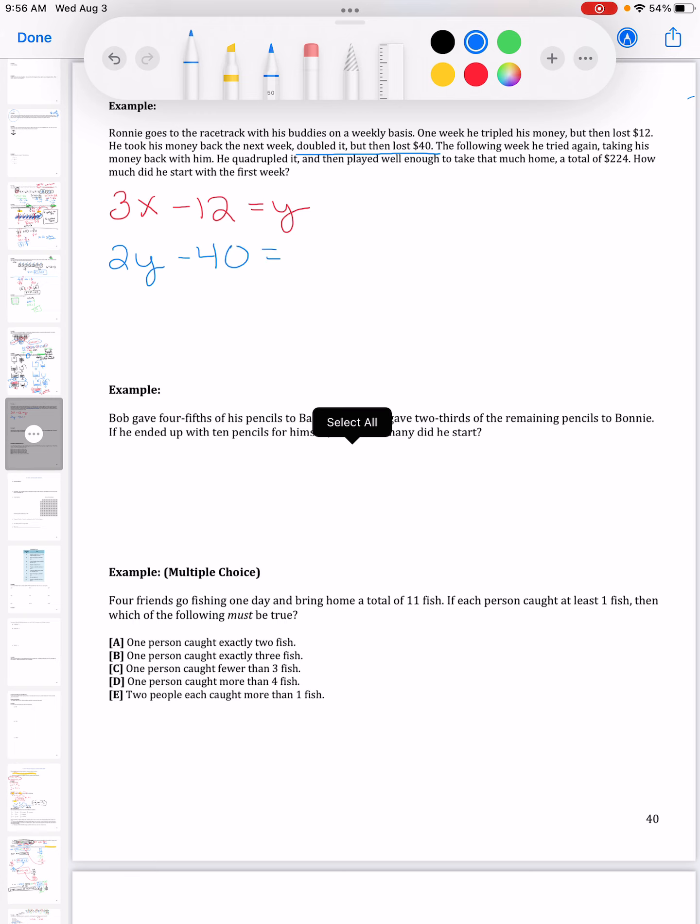So I'm going to double that money and then I lost $40, or Ronnie did, and I'm left with this new amount of money. Then I'm going to go back the third week and he takes that money, so he takes Z, he quadrupled it.